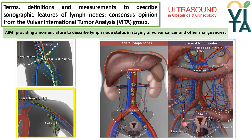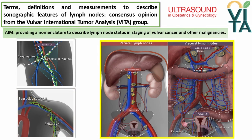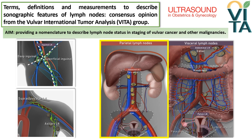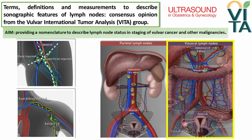These include peripheral lymph nodes such as supradiaphragmatic, supraclavicular, and axillary lymph nodes, and non-peripheral abdominal and pelvic nodes. Among them, the parietal ones are located behind the peritoneum in proximity to larger blood vessels, such as paraaortic and iliac lymph nodes. The visceral lymph nodes are in the intraperitoneal compartment in relation to the vessels of visceral organs, such as the celiac trunk, mesenteric, and epigastric vessels in the pelvis.